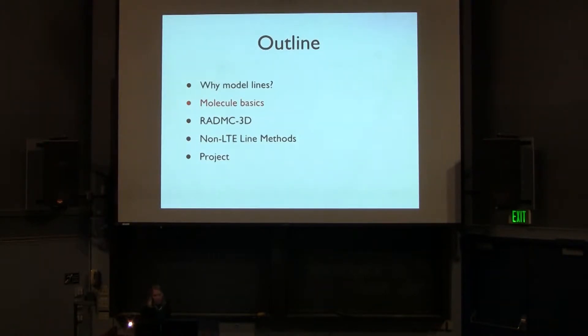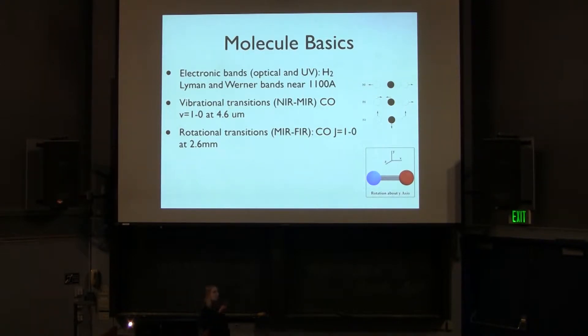So now for some molecule basics. Molecules in these clouds can have several different kinds of transitions. The first one is electronic transitions, where the electrons change their energy state. These typically correspond to higher temperatures, shorter wavelengths. For example, the H2 Lyman and Werner bands, which are near about 1,000 angstroms. The second thing molecules can do is vibrational transitions. An example is the CO first vibrational transition, about 4.6 microns. And then finally, you have rotational transitions.